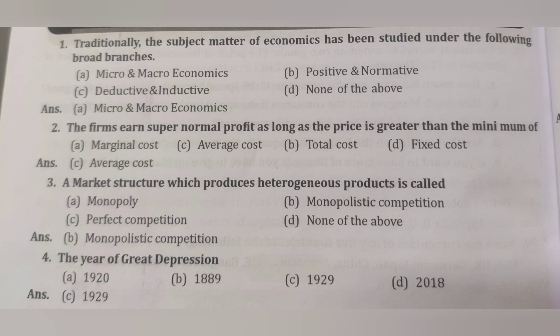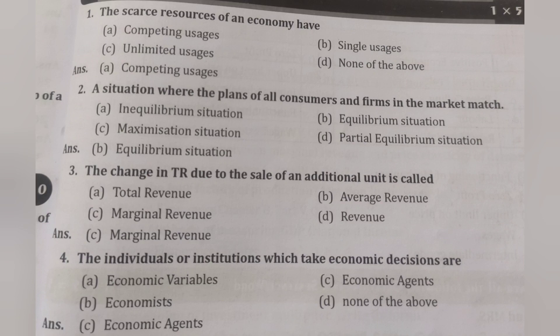The scarce resources of an economy have competing usages. A situation where the plans of all consumers and firms in the market match is the equilibrium situation. The change in TR due to the sale of an additional unit is marginal revenue. The individual or institution which takes economic decisions is called an economic agent. We have completed model paper 2.